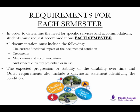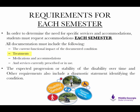Requirements for each semester: In order to determine the need for specific services and accommodations, students must request accommodations each semester. All documentation must include the following: the current functional impact of the documented condition, treatments, medications, and accommodations and services currently prescribed or in use. The expected progression or stability of the disability over time and a diagnostic statement identifying the condition are also required.